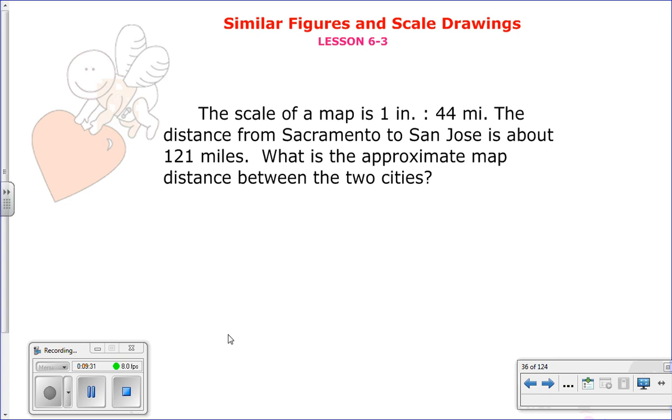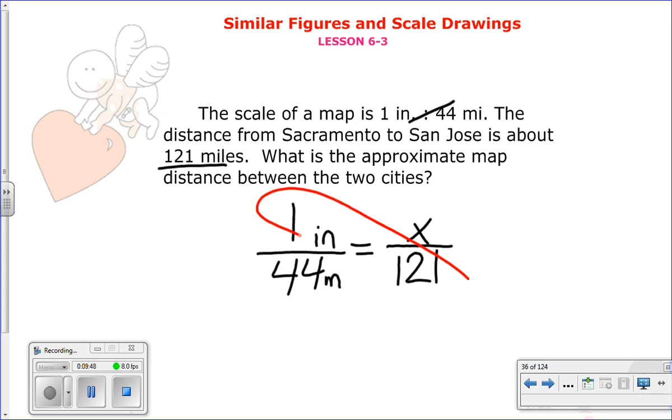Alright, let's get started. Well, I know it's 1 inch is to 44 miles. So, and then the next piece of information they give me is 121 miles. Well, that's on bottom. So, it's on bottom for here, too. And there we go. There's my proportion. Now I solve. 1 times 121 is 121. 44 times x is 44x. I simplify by dividing by 44.